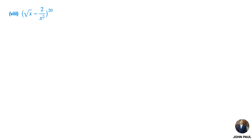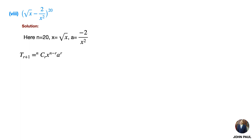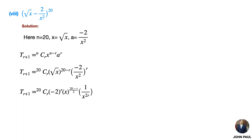Eighth problem: (√x − 2/x²)²⁰. Solution: here n = 20, x = √x, and a = −2/x². The general term formula is T(r+1) = nCr · x^(n−r) · a^r. Substituting and taking the power inside, we get 20Cr · (−2)^r · x^((20−r)/2). Since √x = x^(1/2), simplifying the power of x gives x^((20−5r)/2).